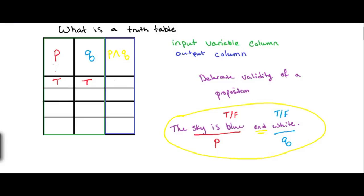We can have it where P is true and Q is false. Then we can have it where P is false, Q is true and where they both are false. So if the sky is blue and white, that would make the whole statement true because both parts are true, making the whole thing true.